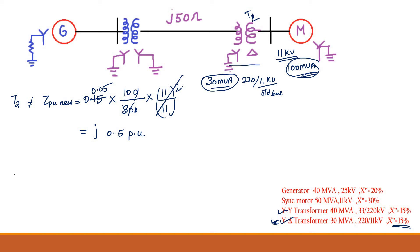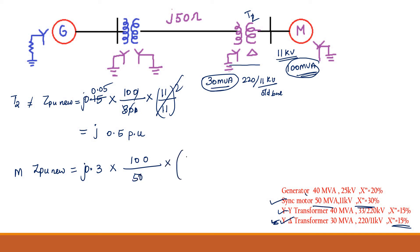Next, I am going to find out ZPU_new for the motor. For the synchronous motor, ZPU_old is J0.3. New MVA is 100, old MVA is 50. Old KV is 11 and new KV is also 11. So the answer is J0.6 per unit. Now we have the per unit value of all the components in the power system.